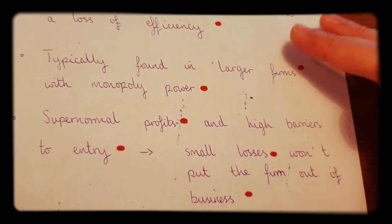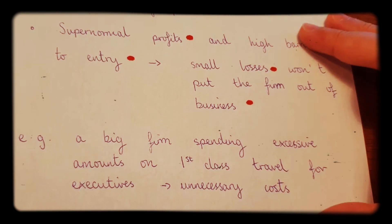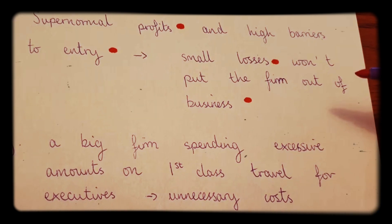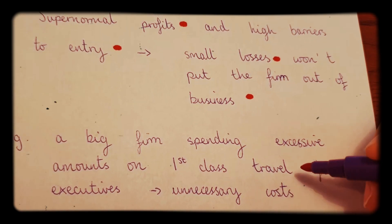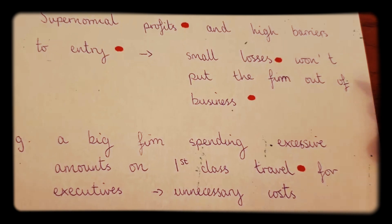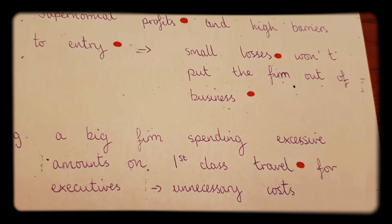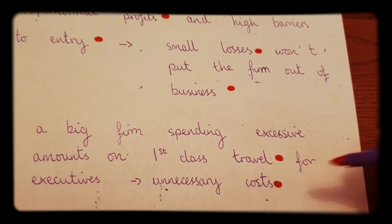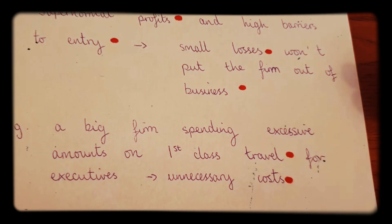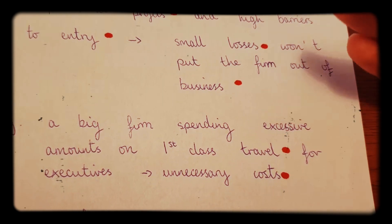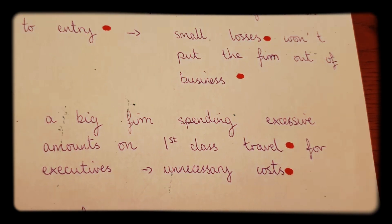What would be an example of X inefficiency? An example would be a big firm spending excessive amounts of money on first class travel for executives — like first class plane tickets or train tickets. These are unnecessary costs, and the firm could save money by not being so excessive with this sort of spending.